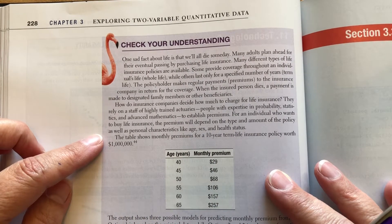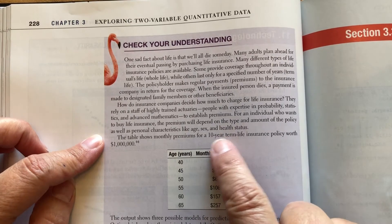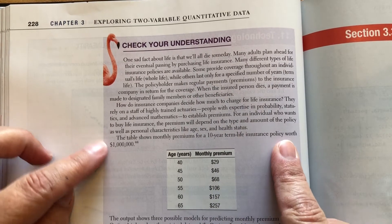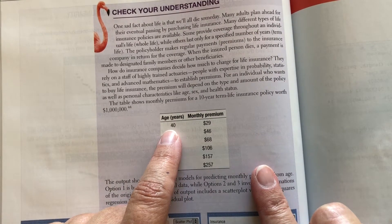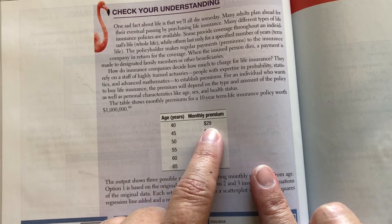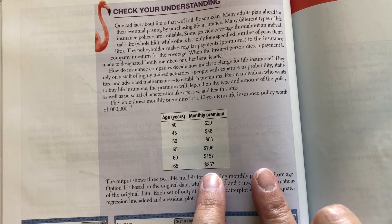The table below shows monthly premiums for a 10-year term life insurance policy worth a million dollars. So of course, if you're 40 years old, the likelihood that you're going to die is a lot less, so it's cheaper. The older you get, the more expensive it is.